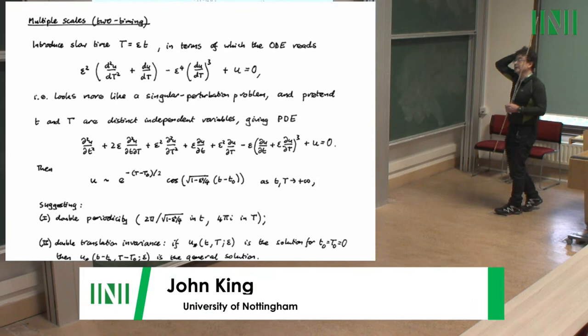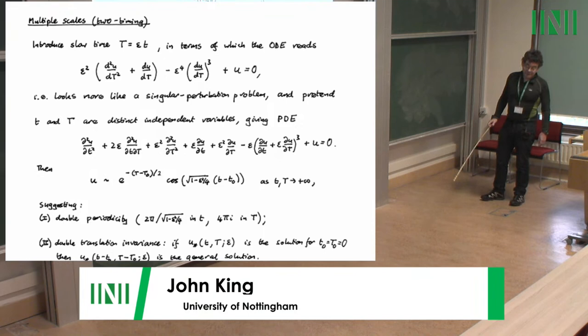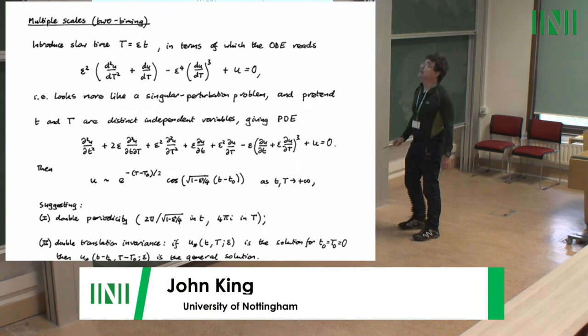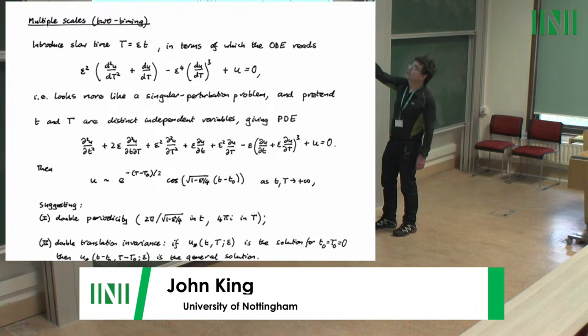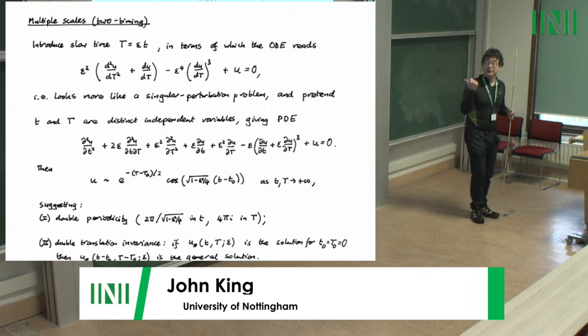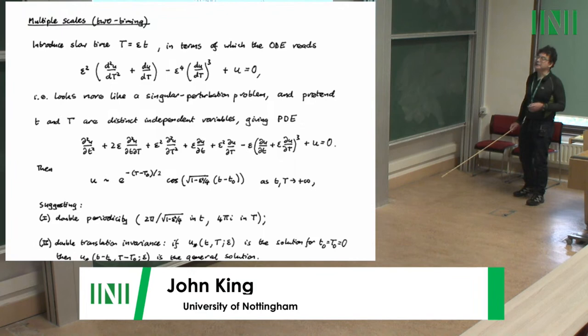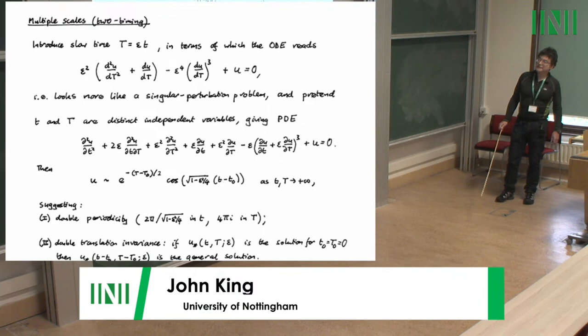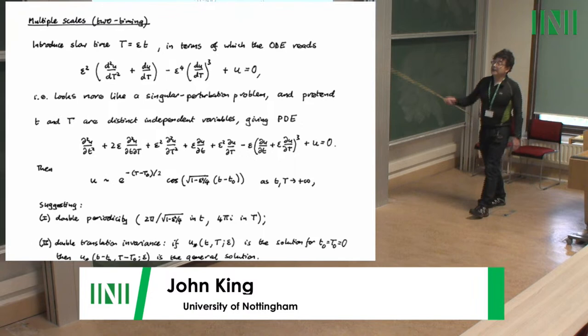The period of the linearized solution is almost exactly the same as the limit cycle period but not quite — there's a factor of 1/16 vs. 1/8 difference — and that will be important shortly. To get onto multiple scales: we introduce a slow time scale, the scale of dissipation. I rewrite the ODE in terms of that variable — not because this version is important, but it makes it more recognizable as singular perturbation theory where the small parameter multiplies the highest derivative, hinting that there will be exponentials behind this.